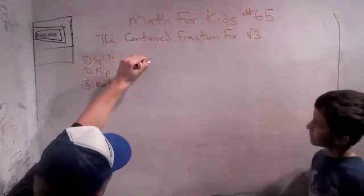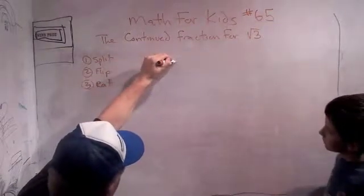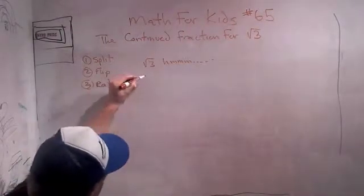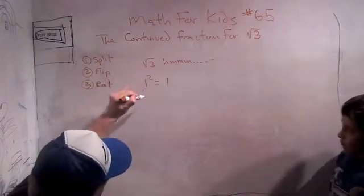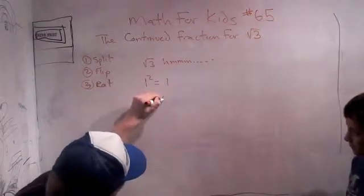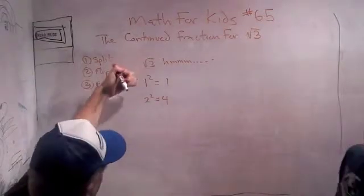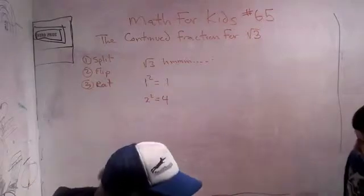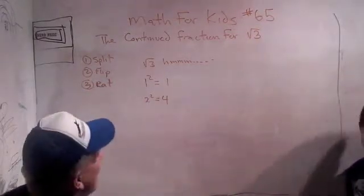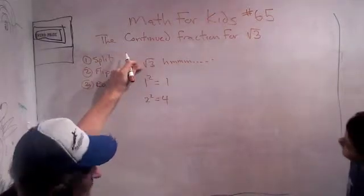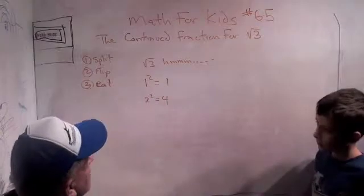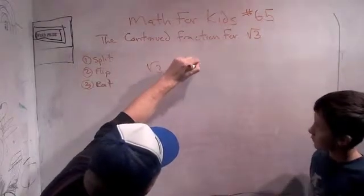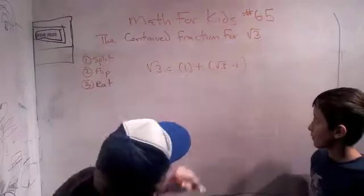Here we go. The square root of 3. What do we know about the square root of 3? Well, we know that 1 squared is 1, and we know that 2 squared is equal to 4. So we know that the square root of 3 is somewhere in between 1 and 2, because the square root of 3 squared equals 3. So we know that 1 is less than the square root of 3 and 2 is bigger than the square root of 3.